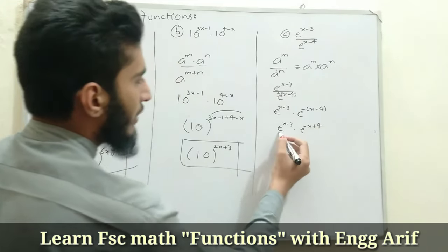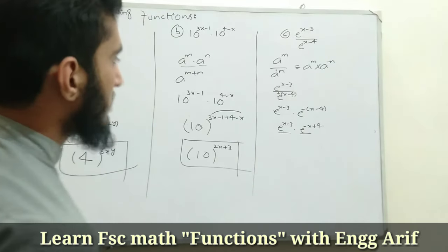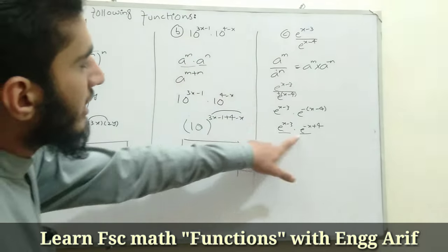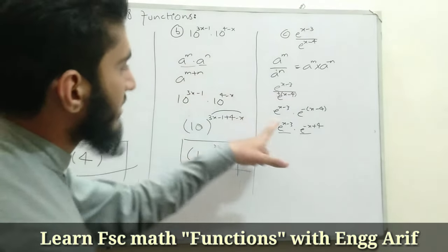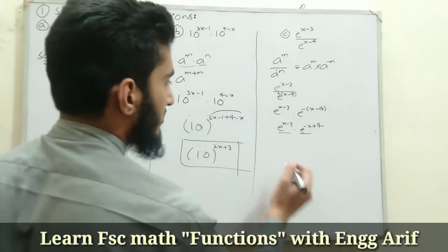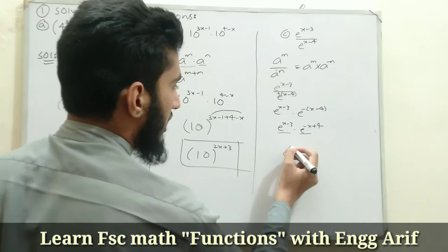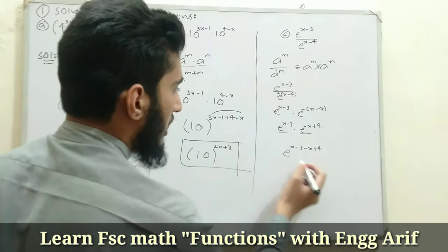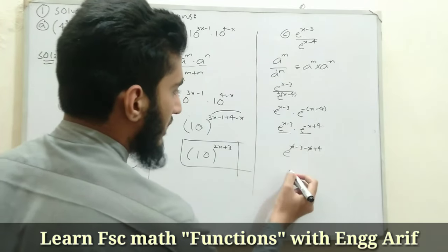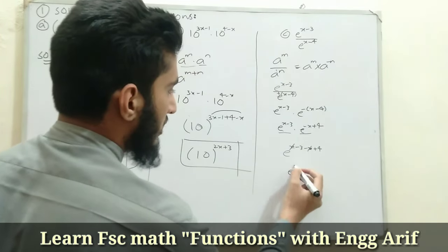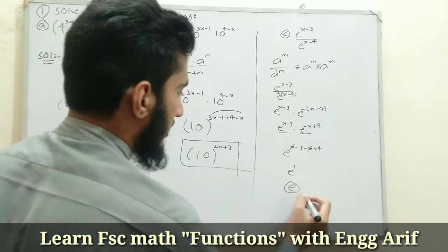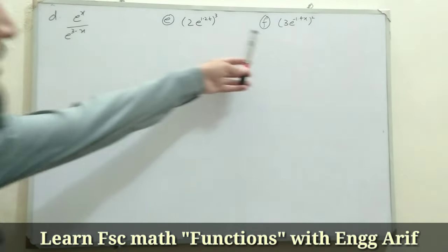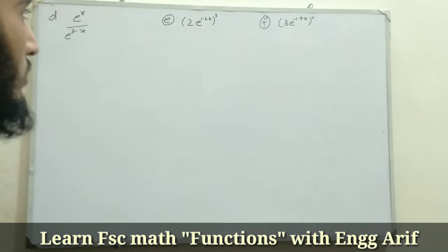Expanding the negative: -(x-4) = -x + 4. So we have e^(x-3) · e^(-x+4). Now using the product law — same base e, add the powers: (x - 3) + (-x + 4). The x and -x cancel, leaving 4 - 3 = 1. So the answer is simply e^1 = e.